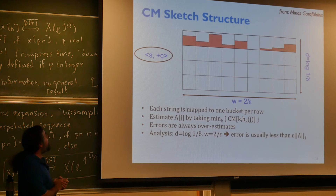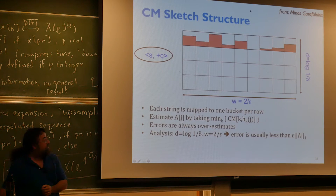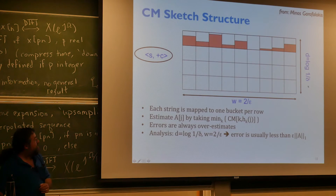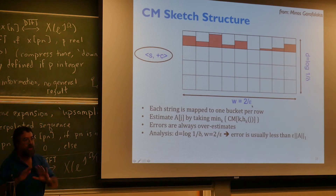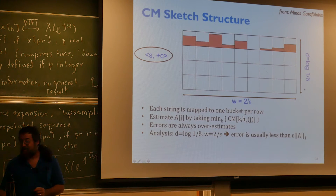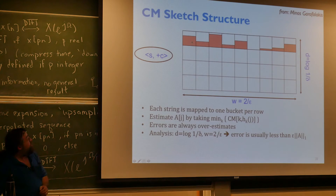Here's the matrix with four rows. Normally the number of rows is about 1/delta, where delta is the probability of getting a wrong answer. The width is something like 1/epsilon, where epsilon defines what you mean by 'way too big.' Those are parameters we set based on the math.